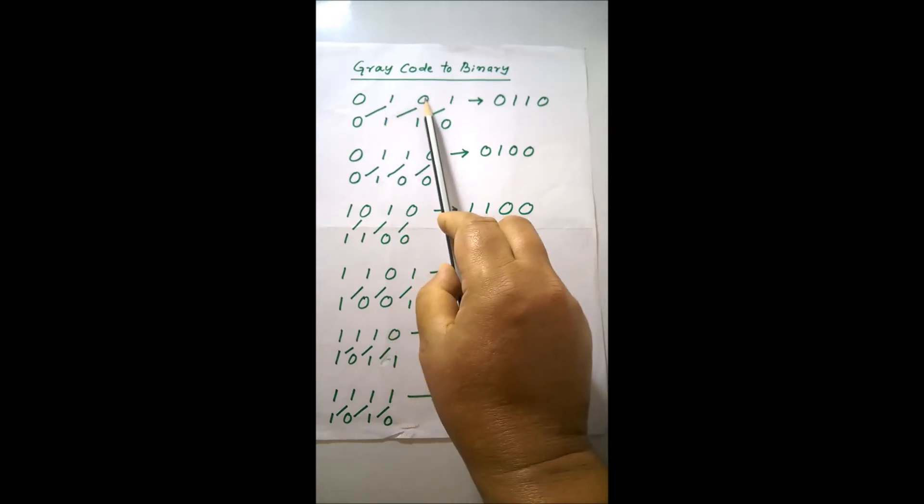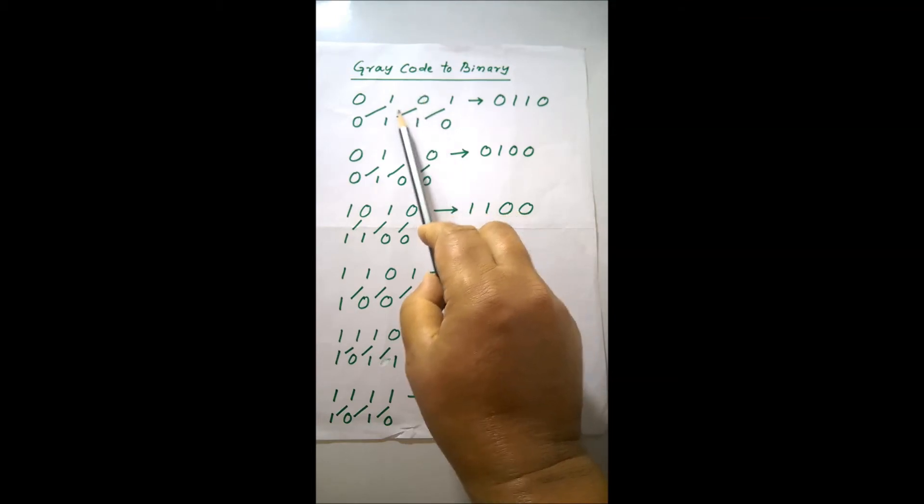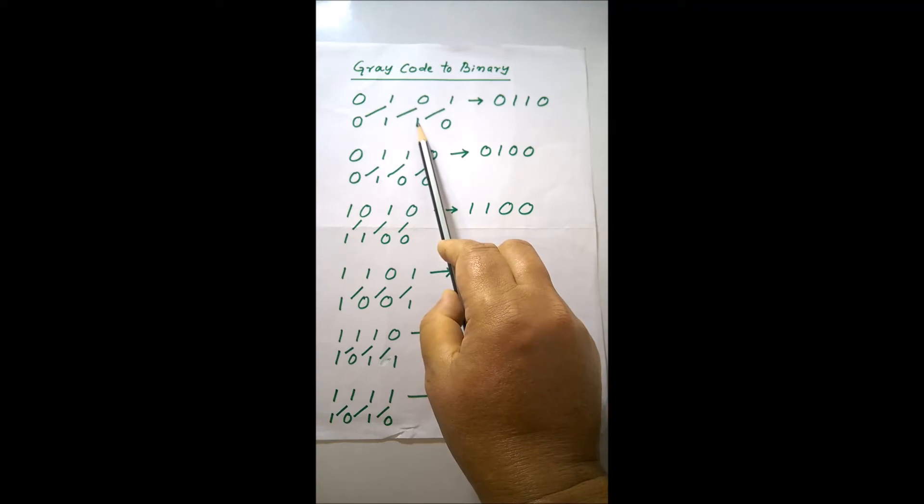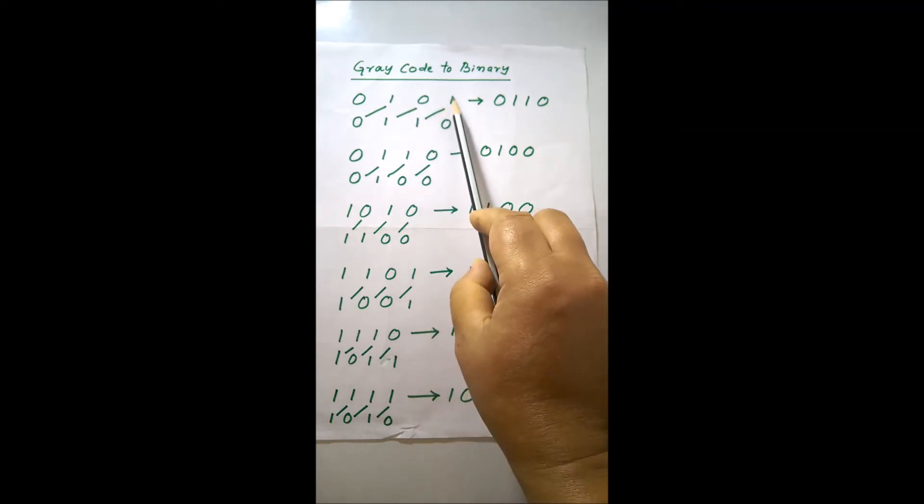Then the second number will be XORing with the third number. Here, I am showing you the straight line. And whatever the result, you write it here. It is your third number. Then this will be XORing with this number. I am showing you the straight line.